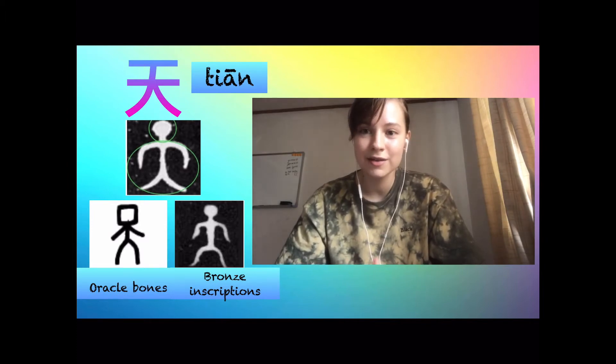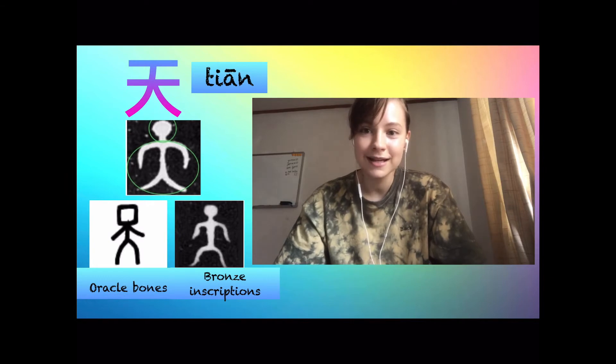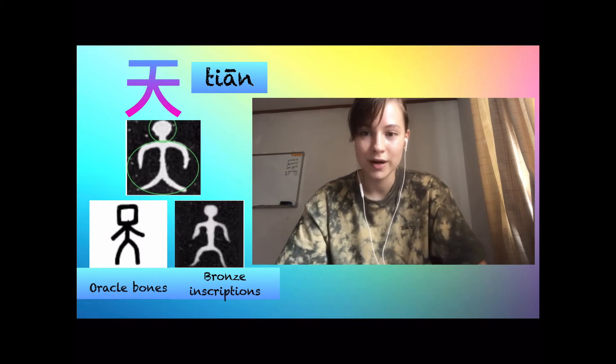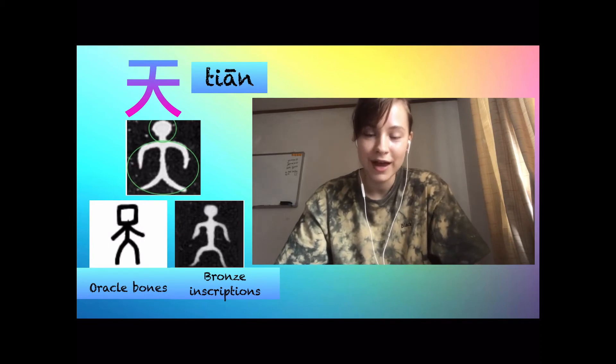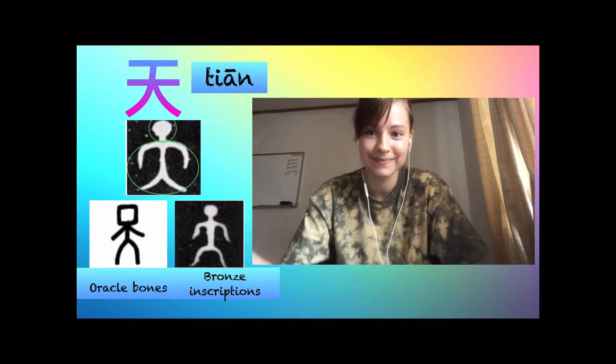The first element, 大 (da), means 'big' in modern Chinese, but if we take a closer look at this element, we realize it stands for a person standing straight. And the dot or square above the character denotes a person's head. So the initial meaning of 天 (tian) was actually not 'sky,' but a person's head. Interestingly, the sky and a person's head both symbolize something supreme — and that's how 天 started meaning 'sky,' the meaning we use in modern Chinese.